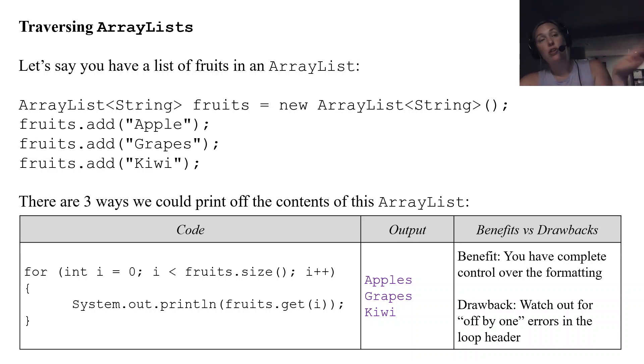The benefit is you have complete control over the formatting. If you wanted to print them on separate lines, same lines, put anything between them, put any sort of extra wording in there. You have complete control over how you want to format that output. But the drawback for this specific type is you have to watch out for the boundary issues. When you're using that for loop in general, you have to be careful of those index out of bounds errors in your for loop header.